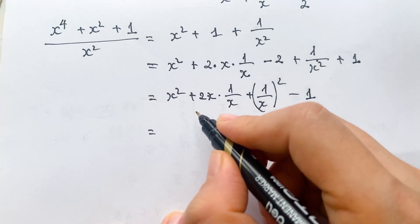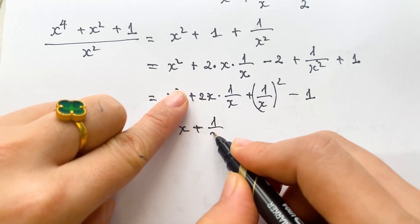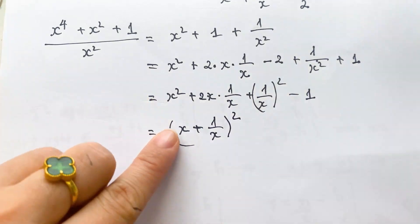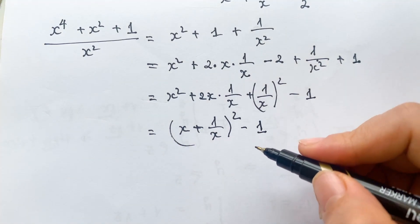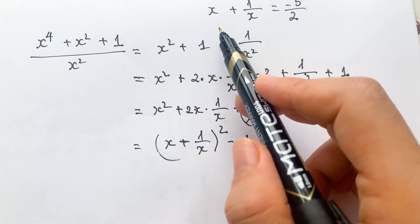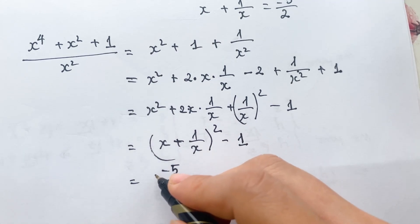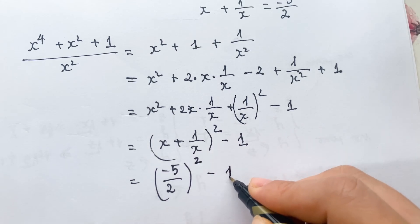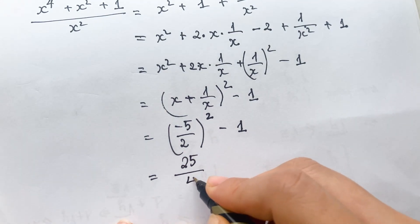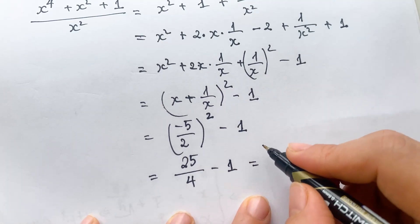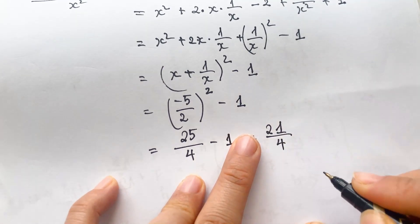So using the identity x plus 1 over x whole squared minus 1, everyone can see the value of the expression. We have minus 5 over 2 whole squared minus 1, which gives 25 over 4 minus 1, and so we also have the value 21 over 4.